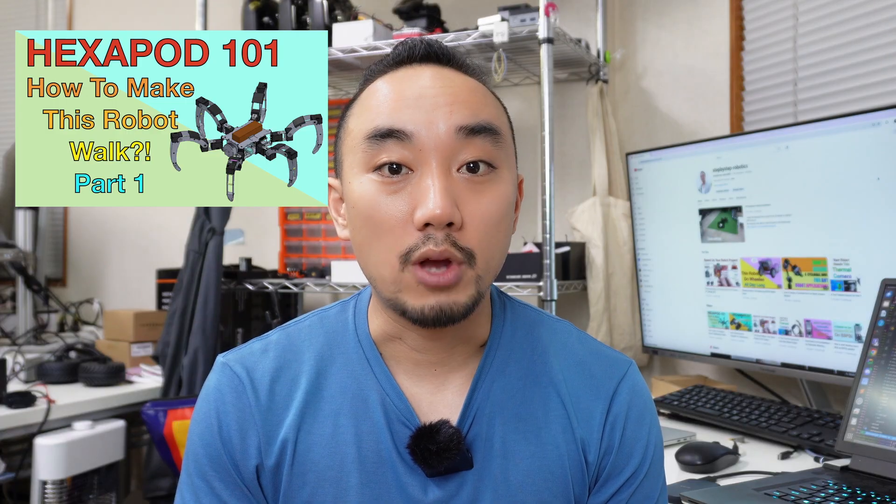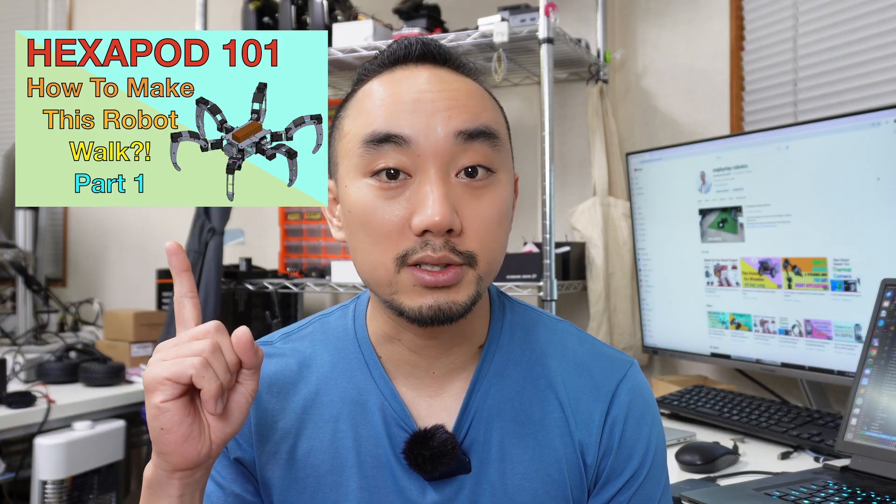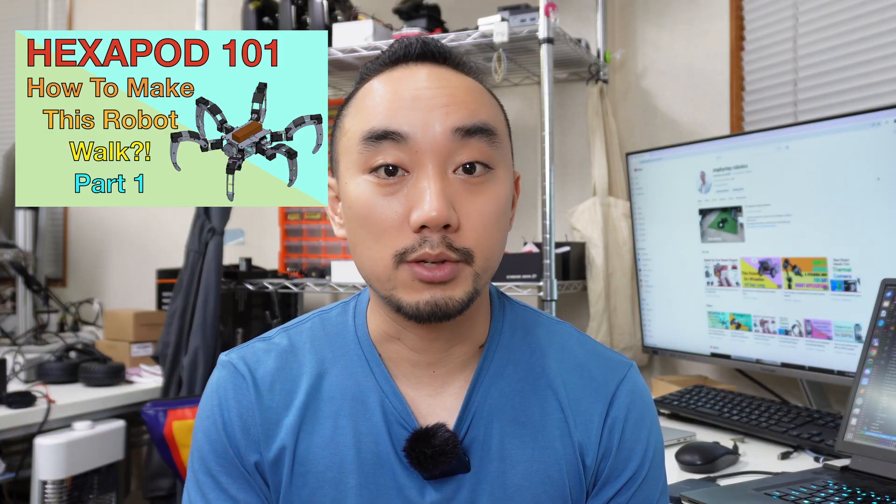Hi guys, this is Rashid and welcome back. This is the second part of the hexapod video. Previously, I have shown the overview of the robot, forward and inverse kinematics of the single legs, and how to make the robot walk by the tripod gate. If you haven't seen the first part, please check on this video first. I will put the link in the video description below.